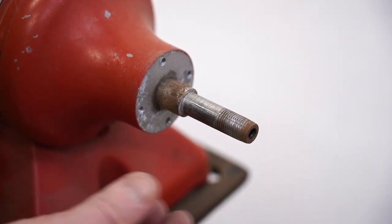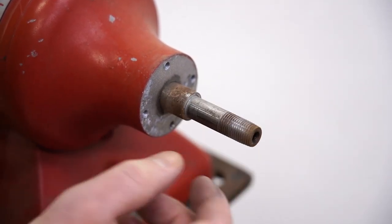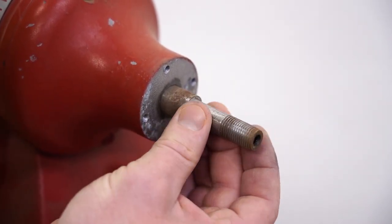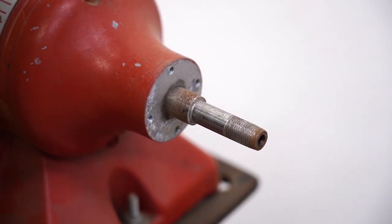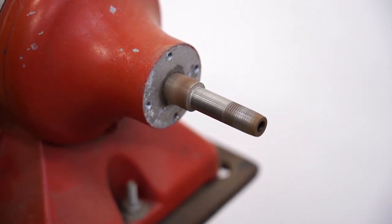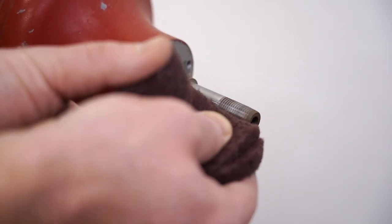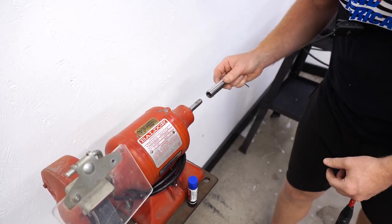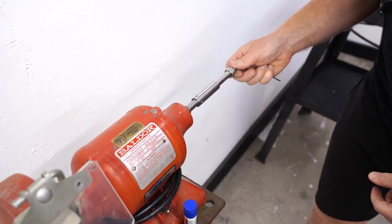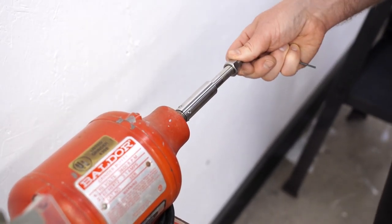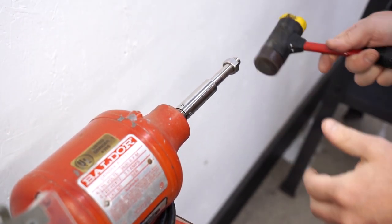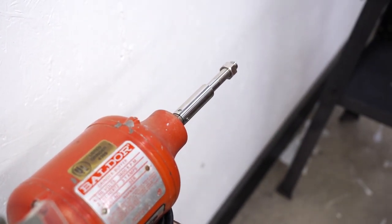Now before you mount the extension, you want to look for any burrs on the shaft here that could hang it up. Or if it's just rusty like this, spin it up and take some Scotch-Brite to it. Now installing the extension is as easy as just sliding it on. Make sure it goes all the way on. If it is not going all the way on, you can just tap it with a rubber mallet.